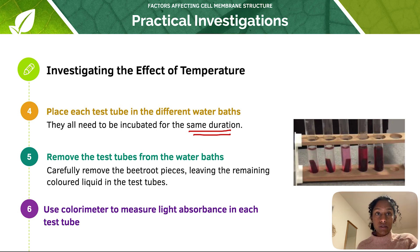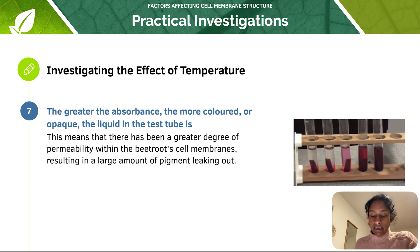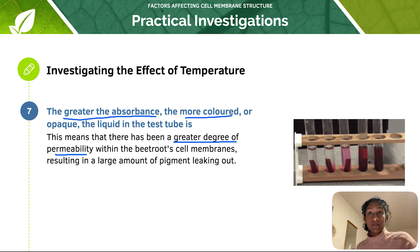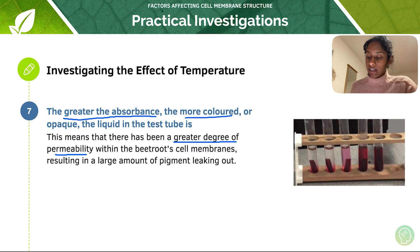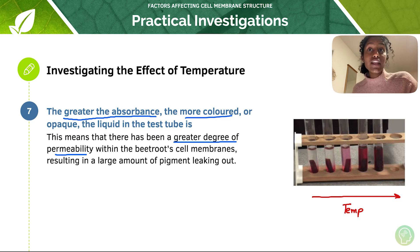Remove the test tubes from the water baths and carefully remove the beetroot pieces, leaving the remaining coloured liquid in the test tubes. Use a colorimeter to measure light absorbance in each test tube — the greater the absorbance, the more coloured or opaque the liquid, indicating a greater degree of membrane permeability and a larger amount of pigment leaking out. As we increase temperature, we get increased leakage of pigment because increased temperature increases membrane permeability and denatures those proteins.